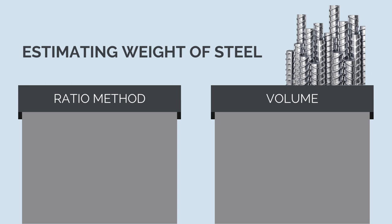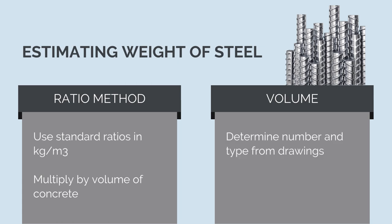For the ratio method, depending on the type of structure, we'll use standard ratios of kilograms of steel per cubic meter of concrete. We then multiply this by the volume of concrete to get the quantity of steel. For the volume method, we determine the number and type of rebar from the drawings, calculate a volume per meter, and then multiply this by the length of the bars. This is more accurate but a lot more time consuming.